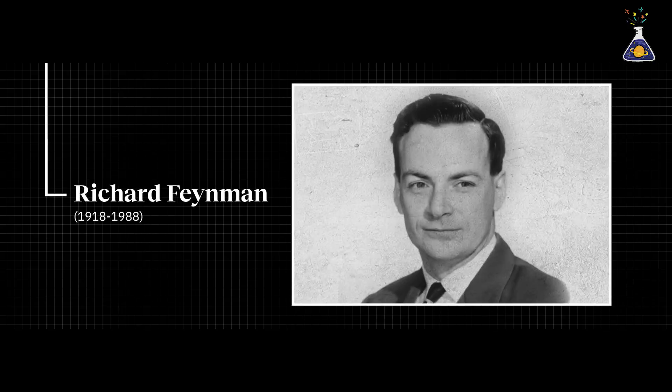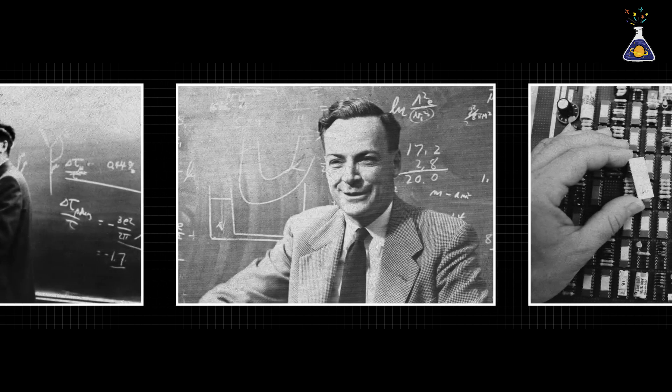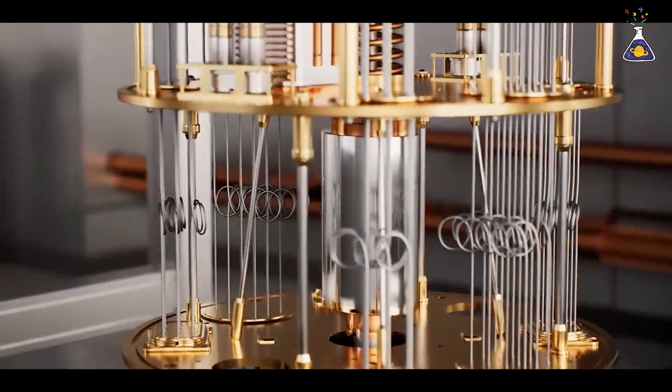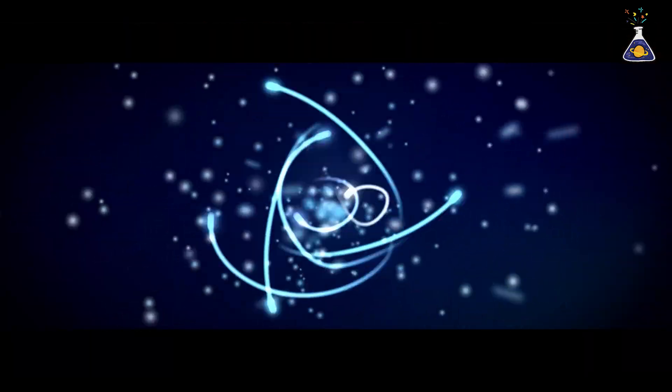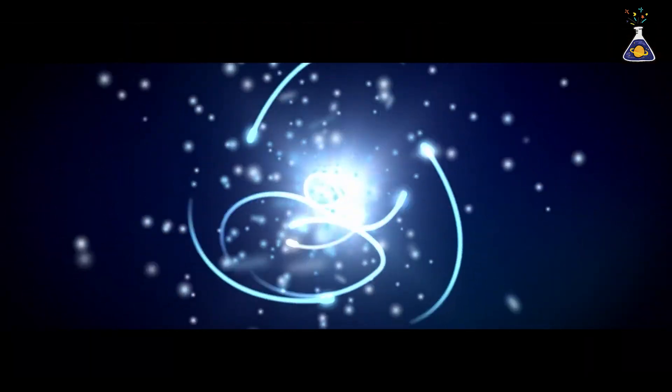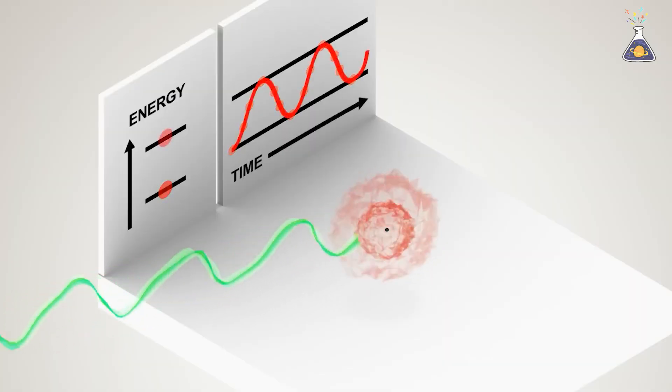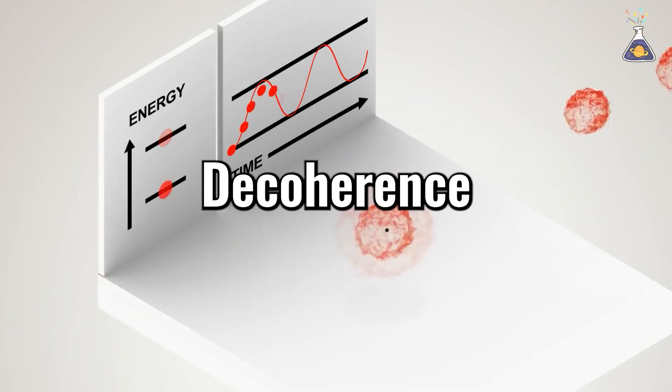Quantum computers were first conceptualized by physicist Richard Feynman in 1982. And since then, IBM, Google, and numerous startups have attempted to develop them using different approaches. But they all ran into the same fundamental problem: qubit instability. Qubits are extremely sensitive to their surroundings. Even slight changes in temperature, electromagnetic waves, or tiny vibrations can cause them to collapse, a phenomenon known as decoherence.